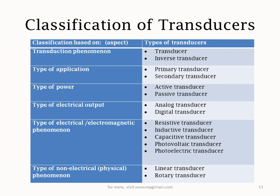Sabse pehla aata hai transduction phenomenon — jaise maine bataya transducer: non-electrical to electrical, aur inverse transducer: electrical se non-electrical mein. So this gives two bifurcations. Next is on the basis of type of application — primary transducer hai, secondary transducer hai — quantity jo bhi measure kar rahe ho uske direct touch mein hai ya koi aur instrument lagake. Next is type of power: woh power leta hai ya usse power supply deni padti hai ya bina power supply ke chalta hai — us basis pe classify kiya hai active transducer and passive transducer.